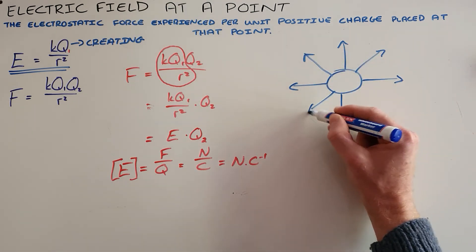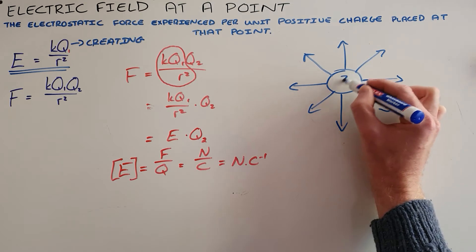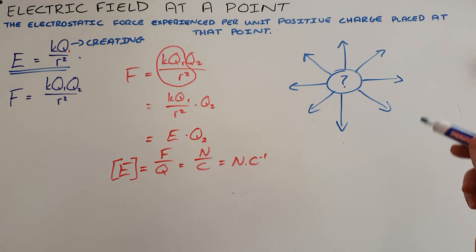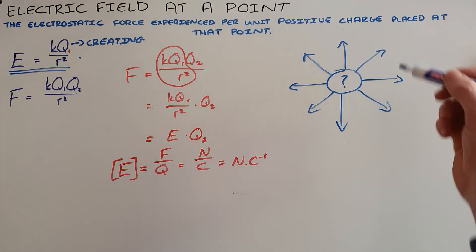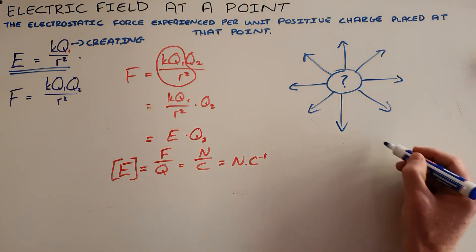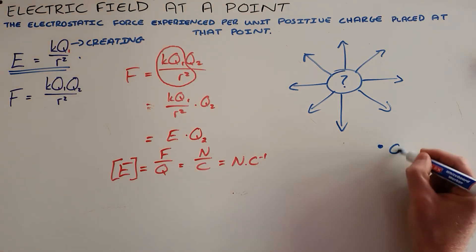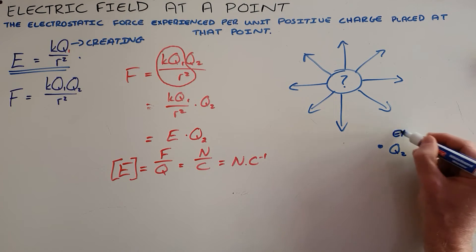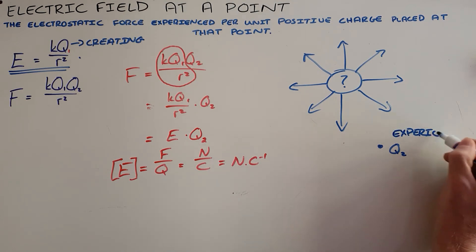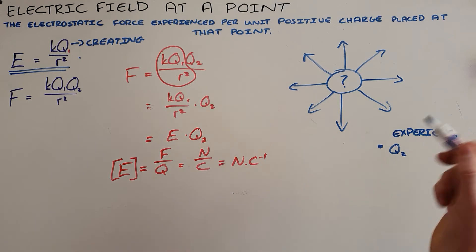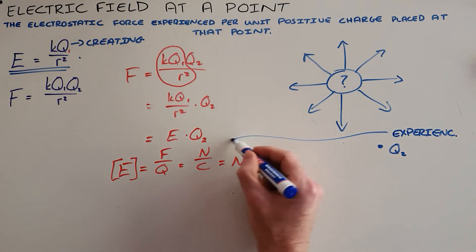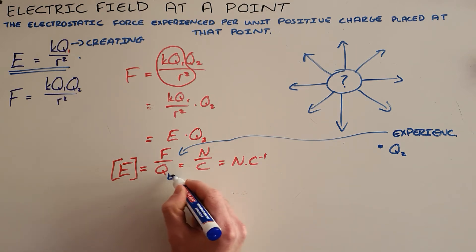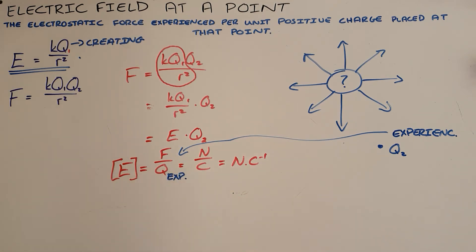We remember that the electric field is the region in space around a charged object. So when you are given the magnitude of that charge, we would use this formula to determine the electric field at an area, in a space, or at a distance from that object. When instead you are given the charge that is experiencing a force, you would use this new formula which says that E is equal to F over Q, where Q is the charge that experiences that force.